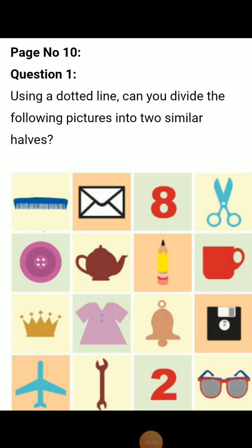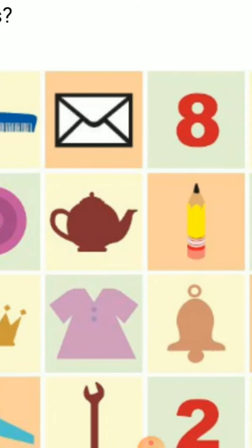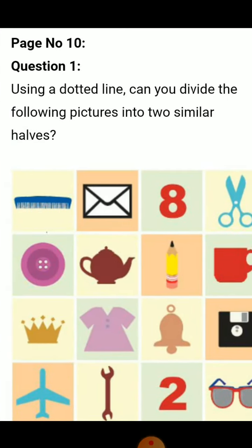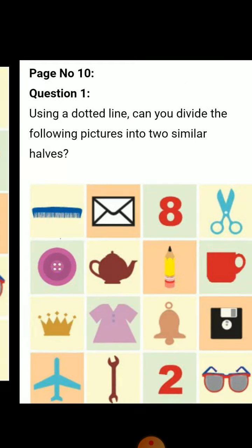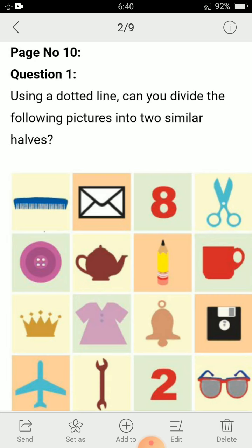Now come to page number 10. Here is also one question given. Using a dotted line, can you divide the following pictures into two similar halves? This is a very simple question. Dotted line means the line of symmetry or imaginary line. By using the imaginary line, can you divide the following pictures into two similar halves? It is asking that by drawing the line of symmetry of any type, can you divide these pictures into two similar halves? In this question, you will draw a line of symmetry by yourself and then check whether the given picture can be divided into identical halves or not.